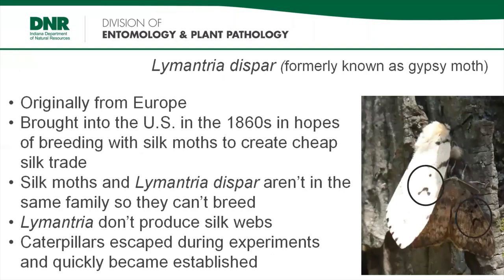Lomantria dispar doesn't belong in North America. They are native to parts of Europe, Asia, and Northern Africa, and were first brought to the United States in the 1860s by a French scientist who wanted to breed Lomantria with silk moths, hoping to create a lucrative silk market. Silk moths are extremely particular about what they eat, so he chose Lomantria dispar because they are not particular — they will eat the leaves of over 500 types of trees and shrubs. Silk moths and Lomantria are not even in the same insect family, so they cannot breed with each other. Identification can be made using distinctive chevron-pointing-to-a-dot markings on the wings of both males and females. Females are white, making the markings stand out; males are much darker in color.